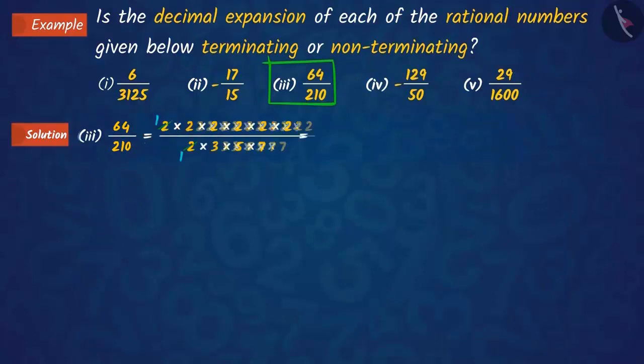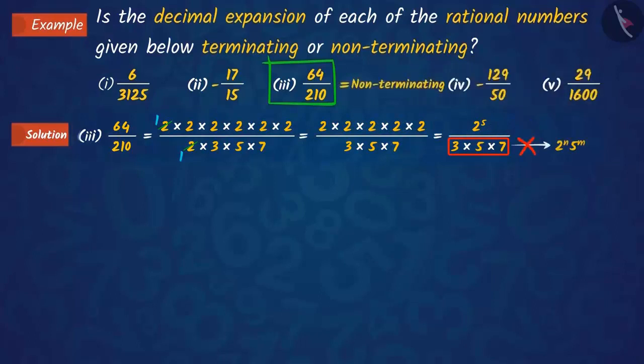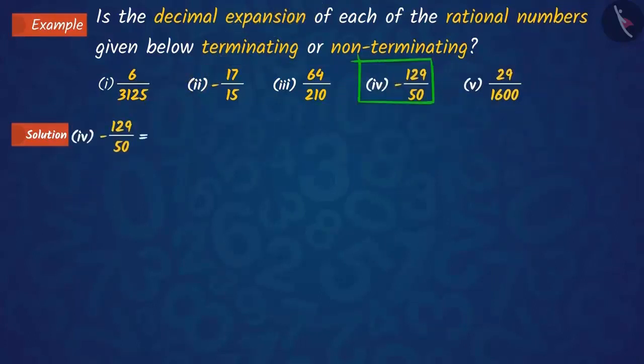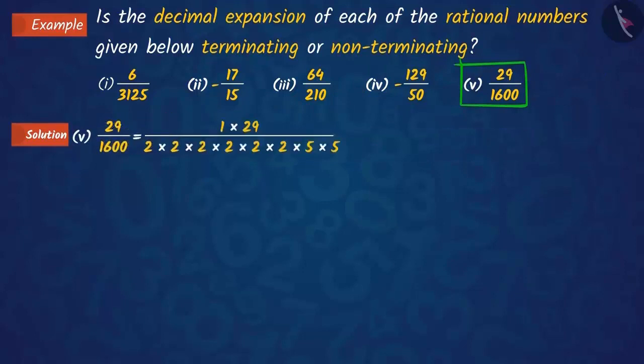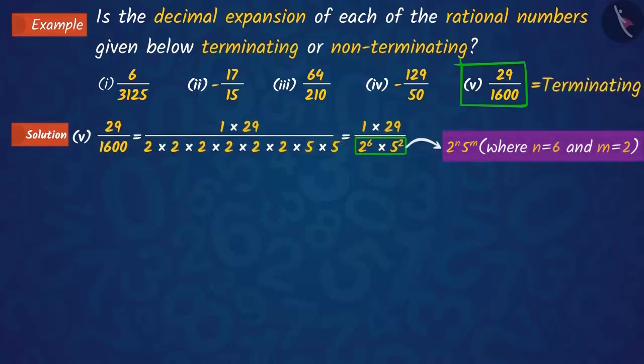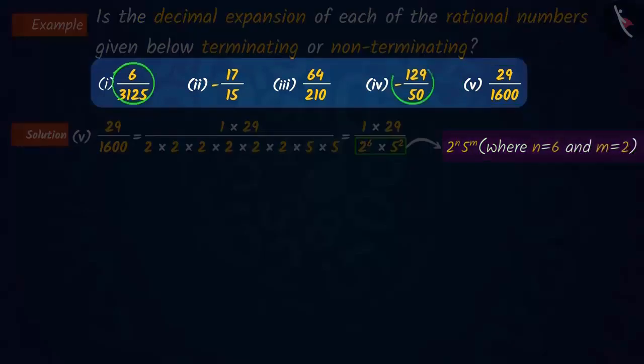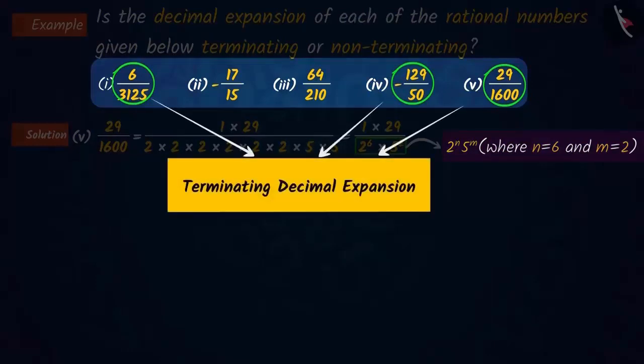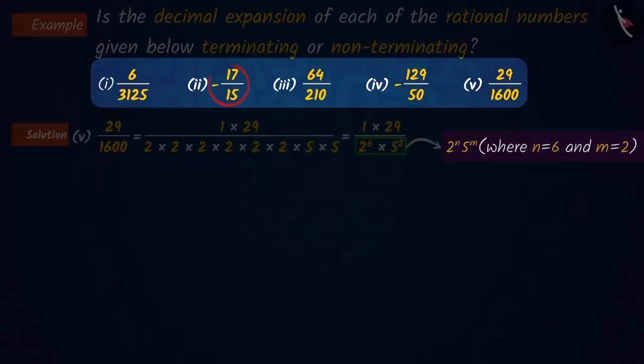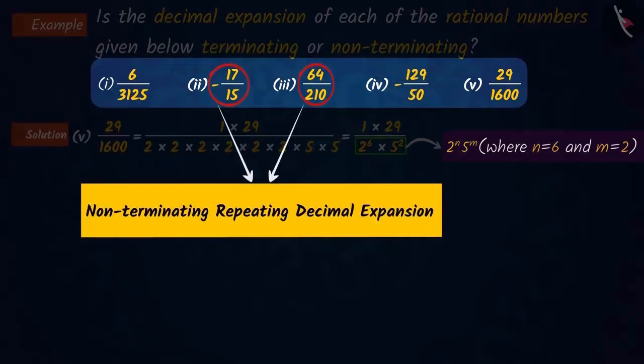Similarly, we can also find out the decimal expansion of the remaining rational numbers. So, the decimal expansions of the first, fourth, and fifth rational numbers will be terminating. And the decimal expansions of the second and third rational numbers will be infinitely recurring, i.e., non-terminating.